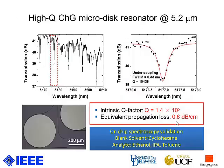Here is the transmission spectrum of the resonance peak we measured. The quality factor we achieved is as high as 1.4×10³, and the equivalent propagation loss is about 0.8 dB per centimeter.